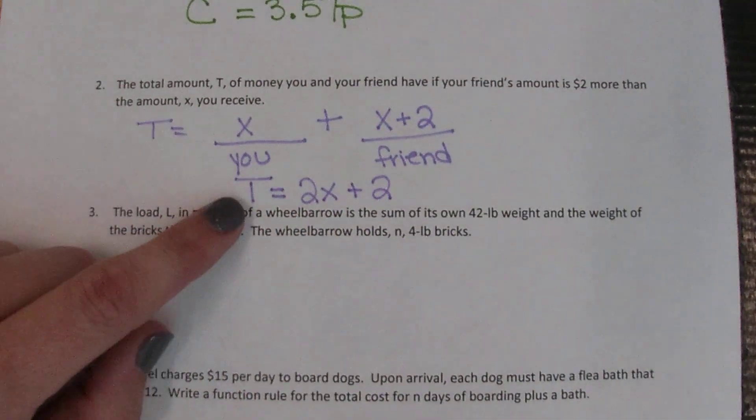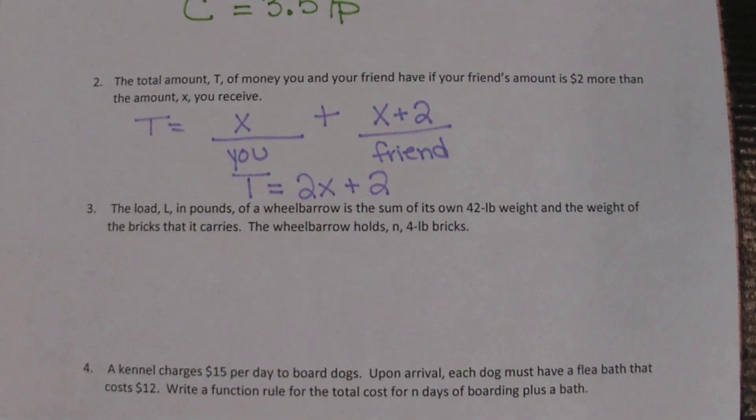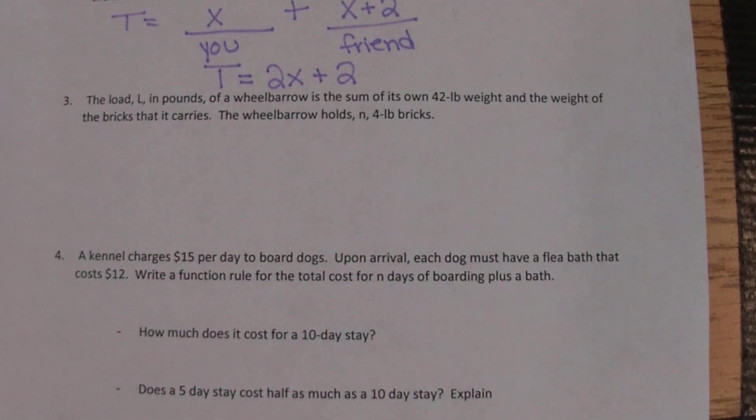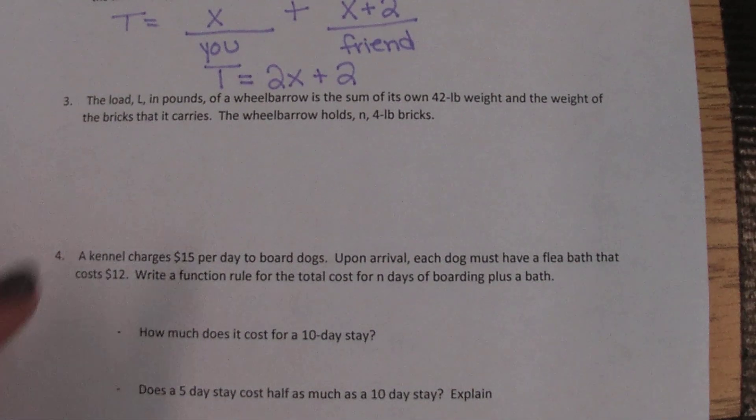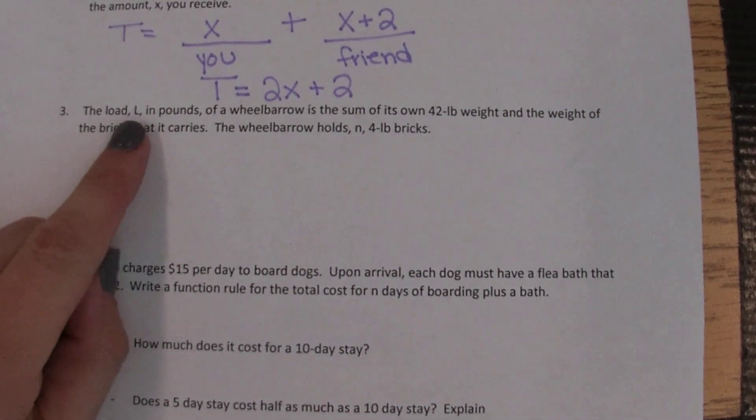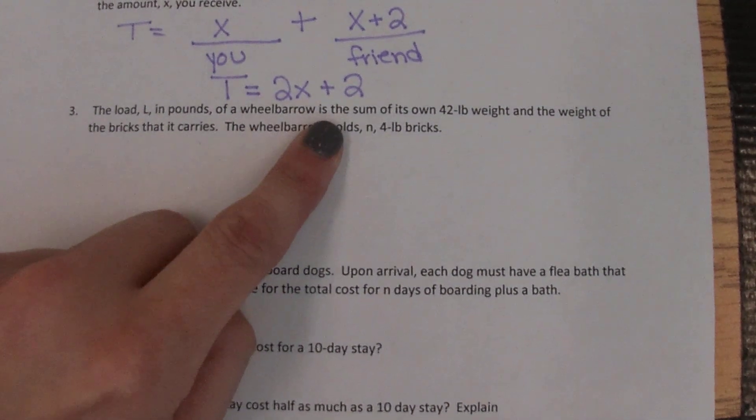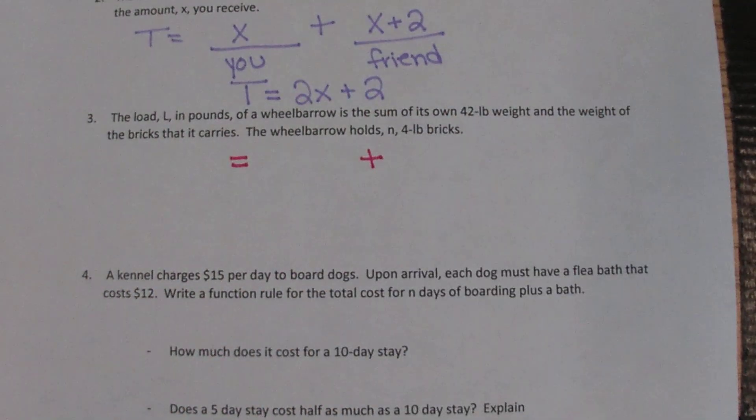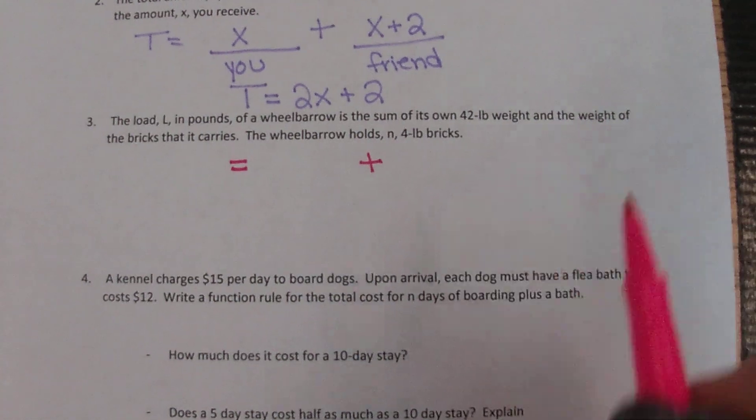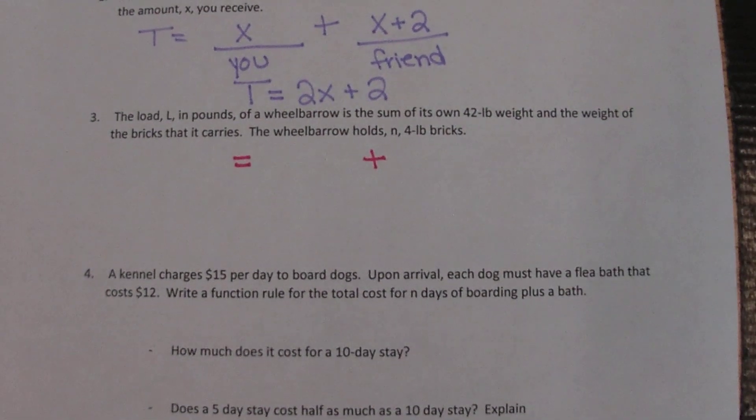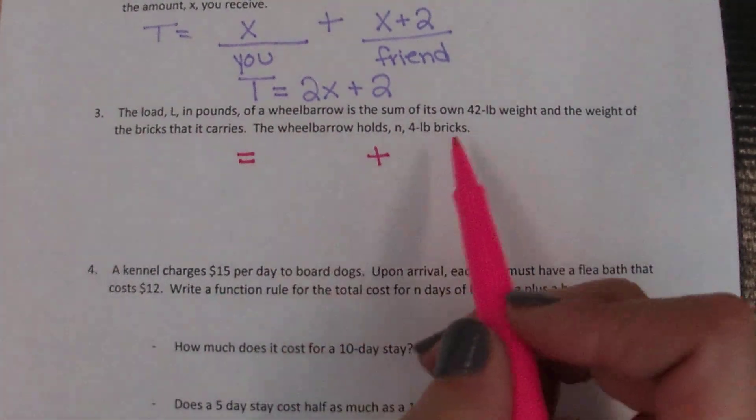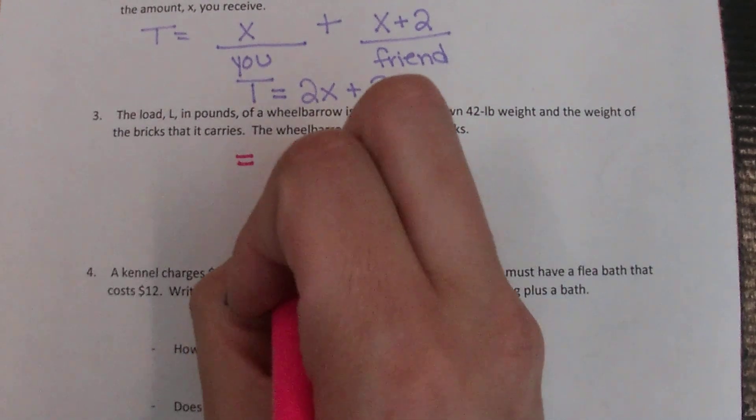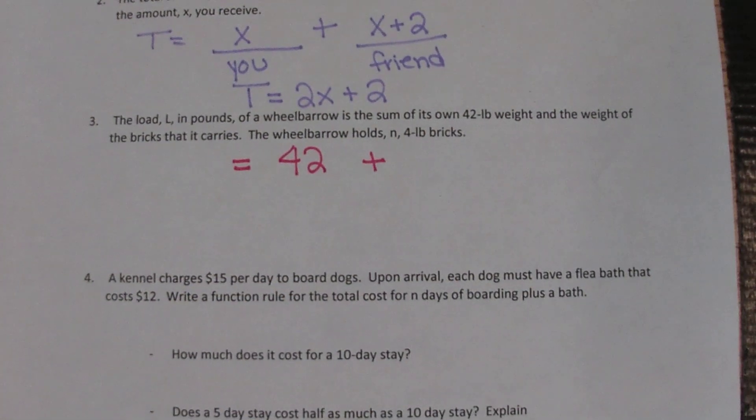Number three, the load L in pounds of a wheelbarrow. So the amount, the load that it can carry, is equal to the sum, which tells us to add, of its own 42 pound weight and the weight of the bricks that it carries. So we need the weight of the wheelbarrow plus the weight of the bricks. It tells us the weight of the wheelbarrow is 42 pounds.